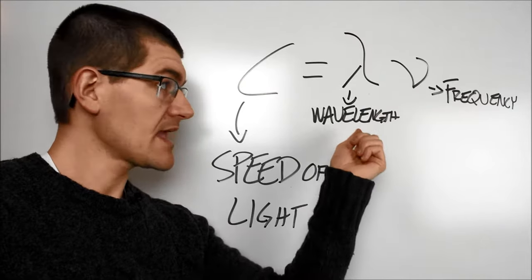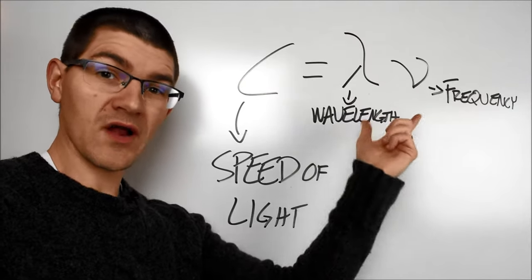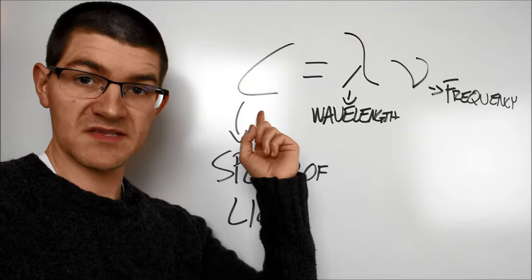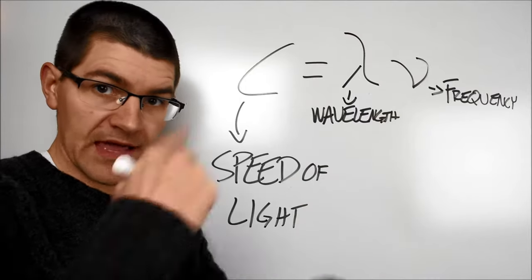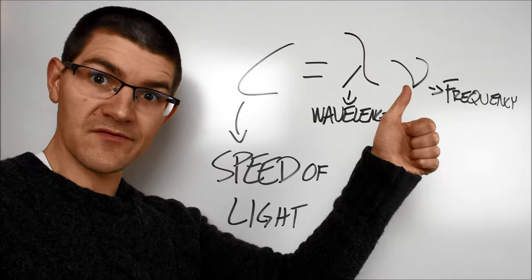With this equation, you can see that the lambda wavelength and nu frequency are inversely related for a given C speed of light. Therefore, the higher the wavelength, the lower the frequency. And the lower the wavelength, the higher the frequency.